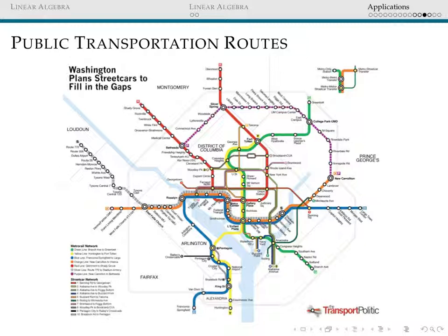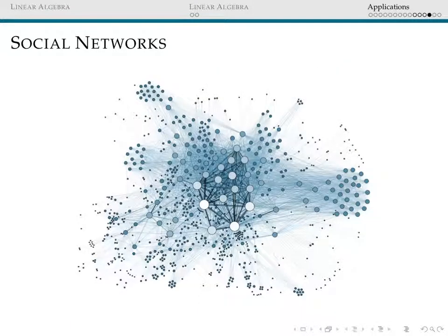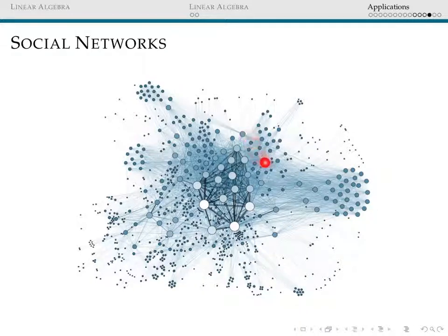We're also going to look at another application of large-scale networks that you're probably even more familiar with — social networks. This is a visualization of someone's social network where each node represents a person, and the size of the node represents the number of liked posts that person would have. Outlying nodes tend to have smaller social influence than nodes in the center of the network. We'll come back at a later date and look at how graphs of social networks can be encoded in matrices. If you have a node for person 1 and a node for person 2, and they know each other, there will be a 1 in slot (1,2) and slot (2,1), assuming mutual connection.